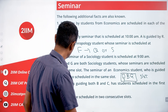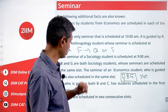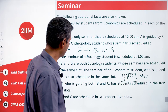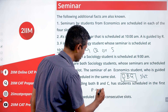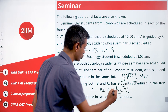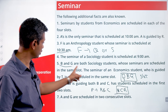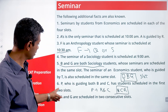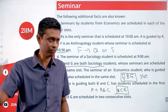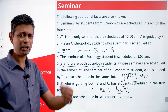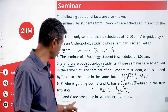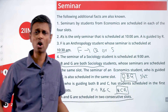P guides both B and C, and P's students are scheduled in the first two slots. B is a sociology student, so C should also be a sociology student. B, C, and G are all sociology students. The remaining students — A, D, E, H — are economics students. A and G are scheduled in two consecutive slots.